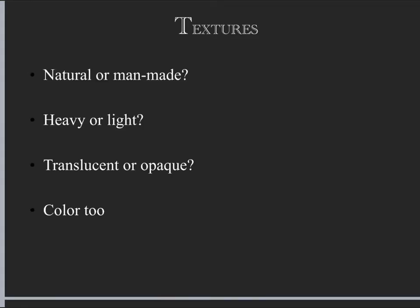A third tool scenery designers use to manipulate reality is texture. Audience members typically don't touch things in a set design, but they can look at things and imagine how they would feel. Texture is all about what things look like and feel like. We can have natural textures — wood, stone, grass, leaves — or manufactured textures like glass, steel, and plastic.